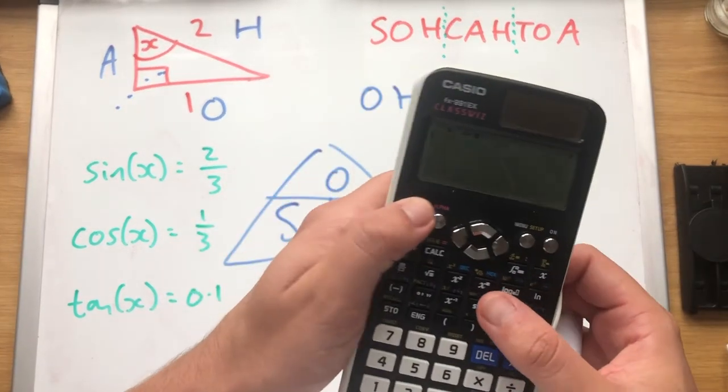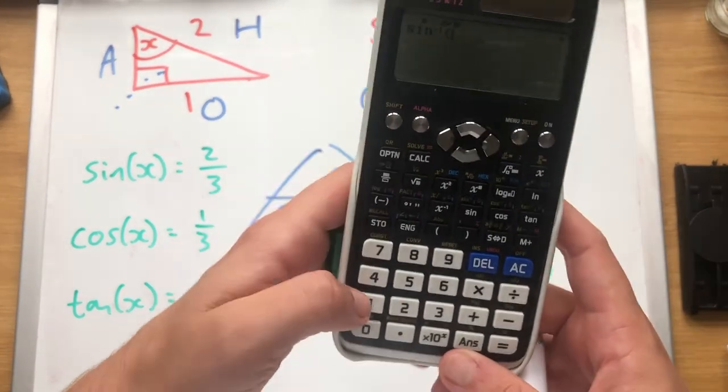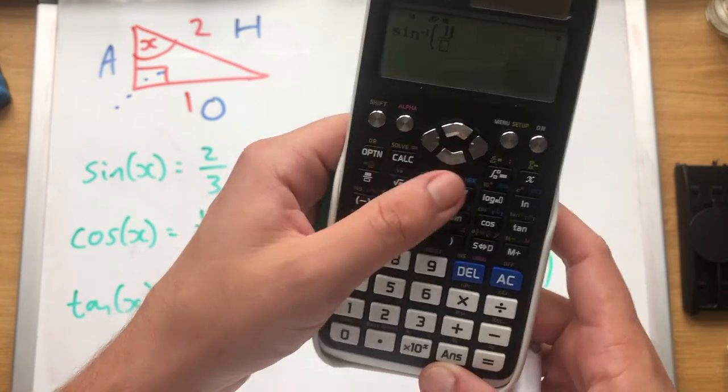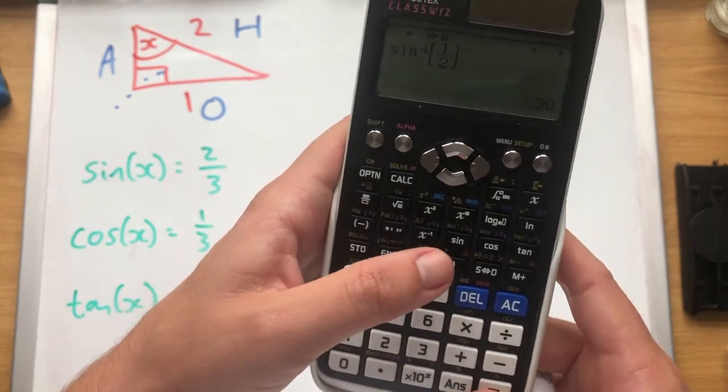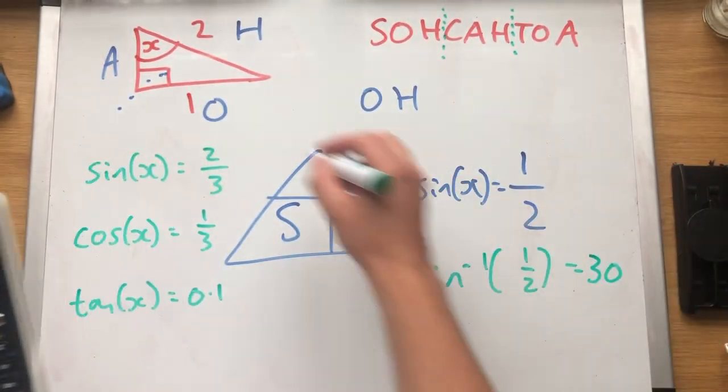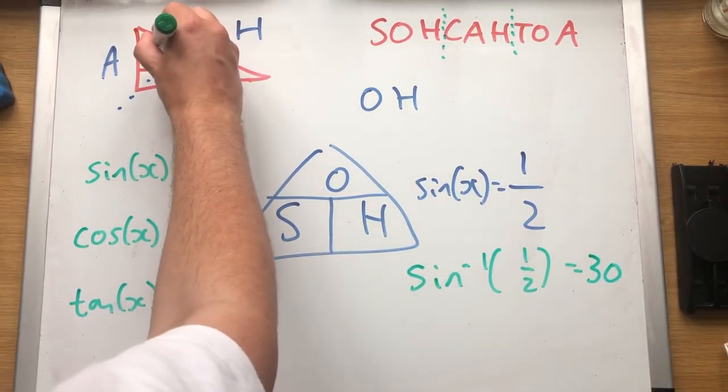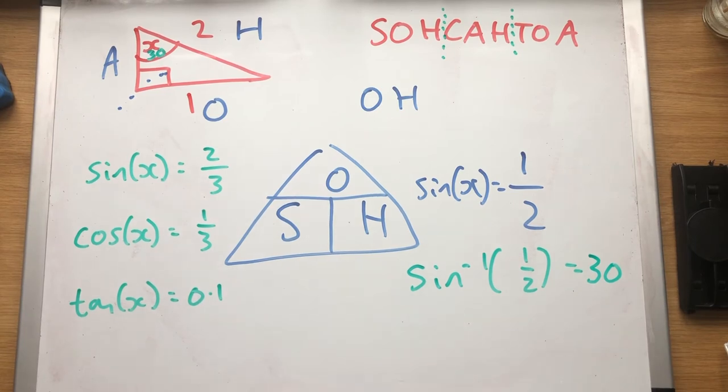And we'll get our answer. So shift, sine, a half, 30. So our angle here, 30. And that's all we have to do. I'm going to do one more quick example now.